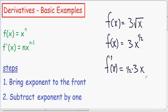Moving on to step number 2 we want to subtract the exponent by 1. So since in the original function the x had a 1 half exponent, I'm going to subtract 1 half by 1. And 1 half minus 1 is negative 1 half. So in the derivative I'm going to write a negative 1 half exponent.